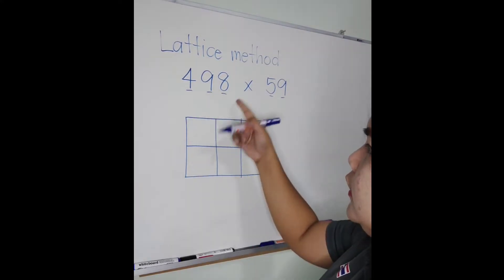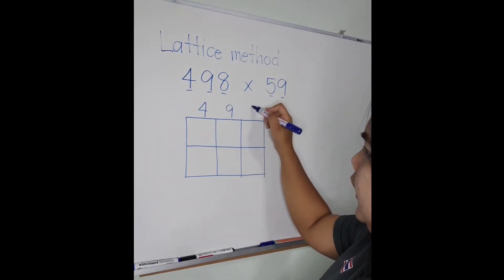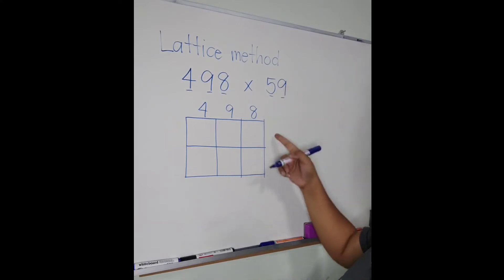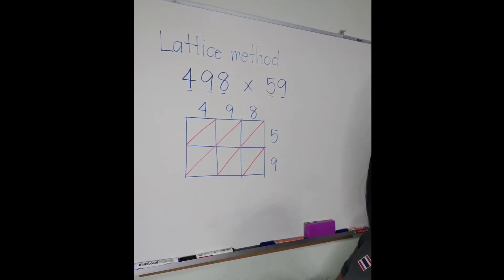Write the digits in each column. So we have 4, 9, and 8, and then here in rows, in each row, so we have 5 and 9. Next step, make a diagonal line. Then after that, multiply one column, one row, one column, one row, like that.